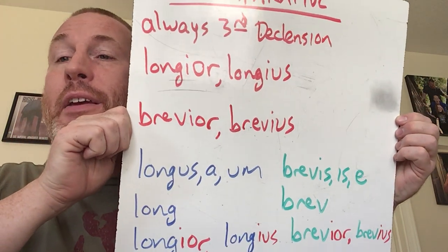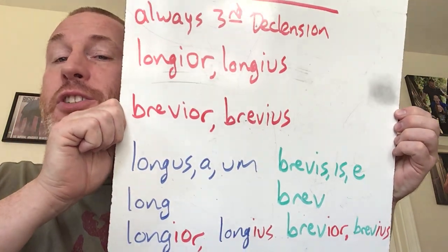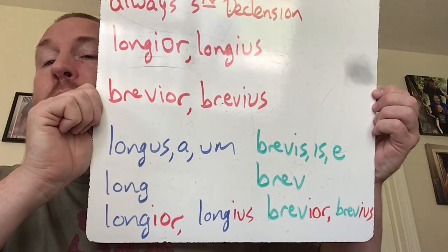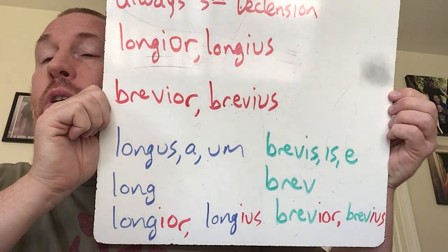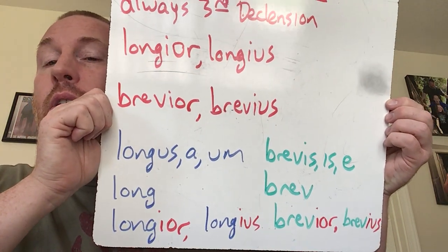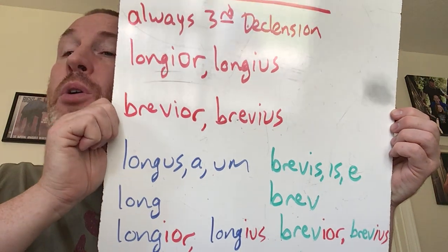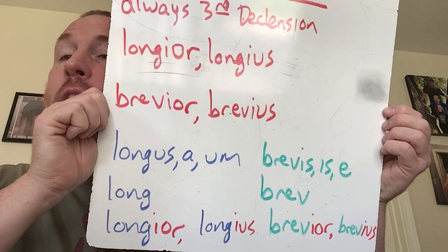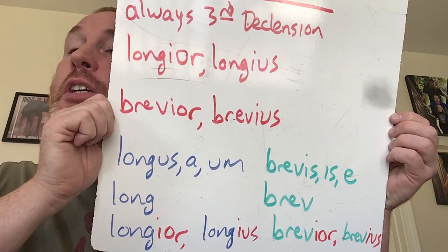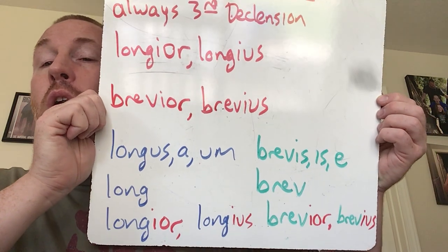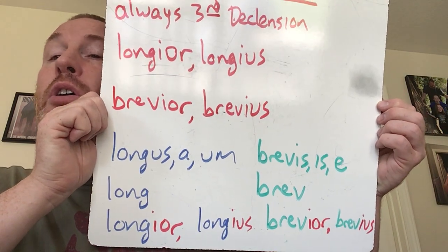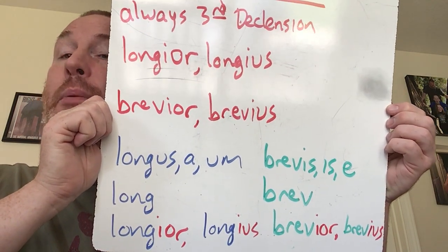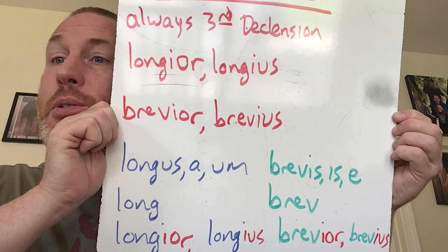You knock off the ending, so you've got your stem — long or brav — and then you add on -ior or -ius. So -ior works for masculine and feminine, and -ius is for neuter. So longior, longius, bravior, bravius. That's how it works.